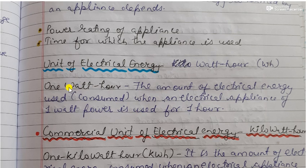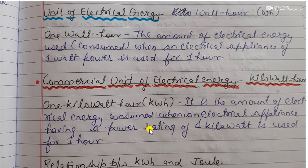The commercial unit of electrical energy is kilowatt-hour. One kilowatt-hour is the amount of electrical energy consumed when an electrical appliance of power 1 kilowatt is used for 1 hour.